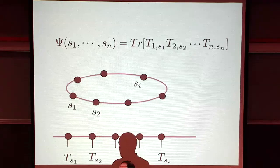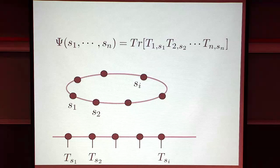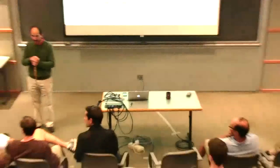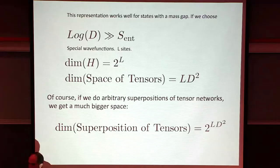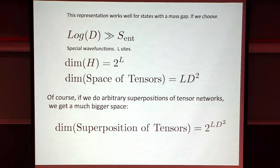People solve numerically for these ground states - it's a variational ansatz. That will work as long as the entanglement entropy is small enough relative to the dimension of the tensors. It will work for systems that have a mass gap, for example, and will not work for a system that is conformal in the infrared or scale-invariant in the infrared. If the entanglement entropy is proportional to L, then it won't work.